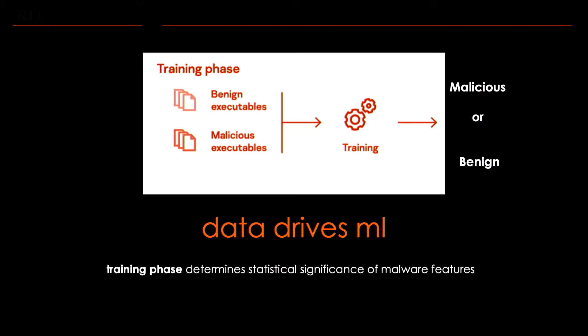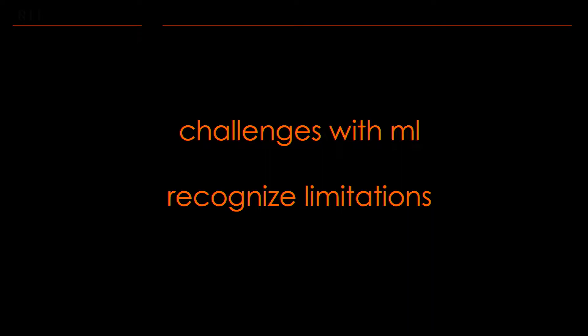It is important to emphasize the data-driven nature of this approach. A model created for malware attack detection and prevention depends on the data it has seen during the training phase. That's an important concept to keep in mind — so the model can determine which features are statistically significant or relevant for predicting if a file is malicious or benign. That statistical significance comes from the data the model has been trained on.